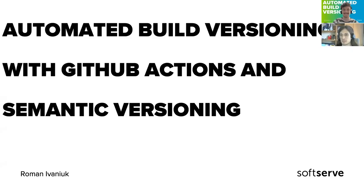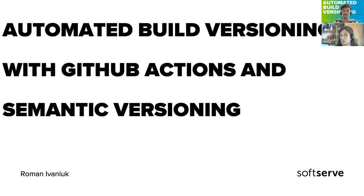In reality, this topic is really simple — there is going to be zero rocket science. It's mostly about how you can gather a couple of really simple concepts into something that is already working and bringing you a lot of value, or really just covers the problems that you have. The actual topic would be: automated build versioning with GitHub Actions, Semantic Versioning, and Conventional Commits.